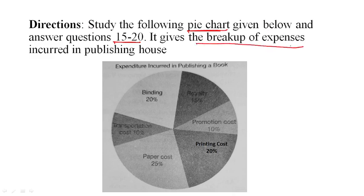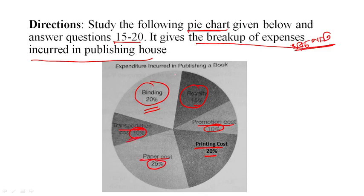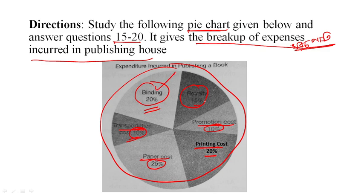The breakup of expenses incurred in a Publishing House: Promotion Cost is 10%, Printing Cost is 20%, Paper Cost is 25%, Transportation Cost is 10%, and Royalty is approximately 15%.